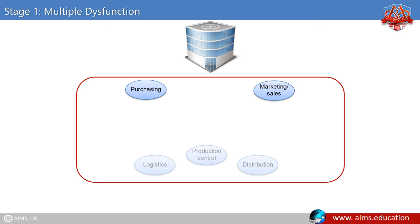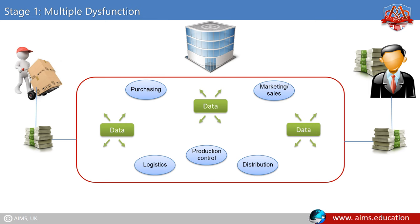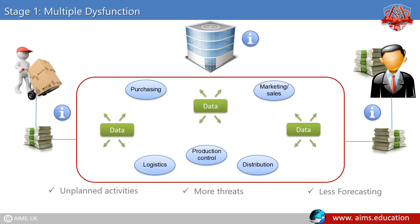Stage 1: Multiple dysfunction. The nucleus organization lacks internal definition and goals. There are no external connections other than a few transactional links. The below exhibit illustrates the lack of coordinated flows of information or solid relationships among potential partners. Such organizations have unplanned activities, more threats, less forecasting, demand and supply issues, and poor payment flows.